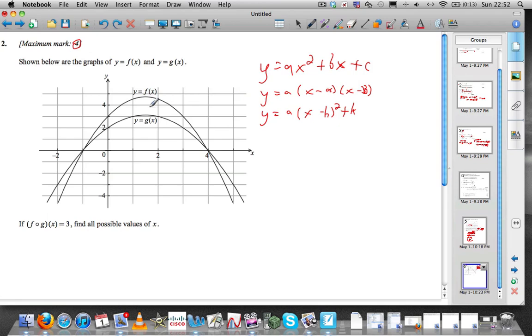In f of x, it's minus three quarters. In g of x, it's minus one half. Then you end up with, you don't need the vertex form because you don't have the vertex, but you need all three of those forms inside out and upside down.